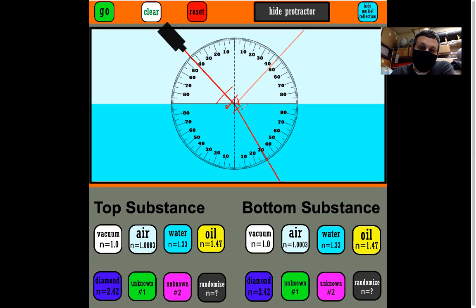If it didn't refract, it would keep going along this path. We say this refracts toward the normal. When it's going into a slower medium, it refracts toward the normal.